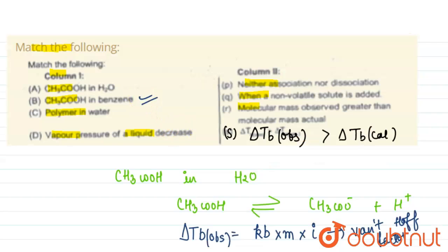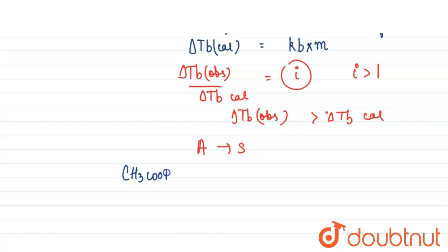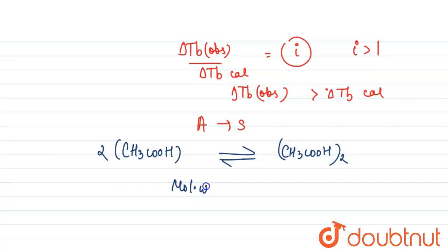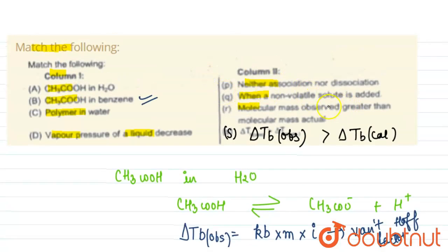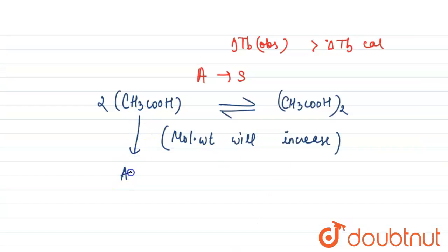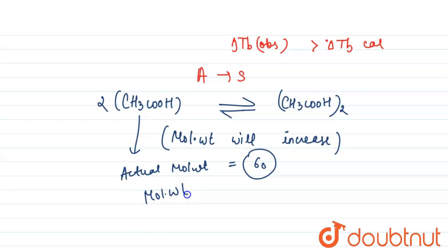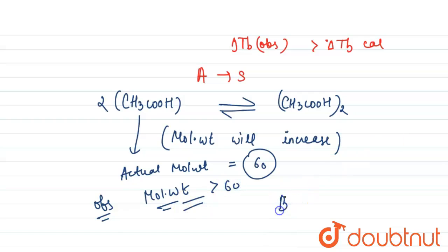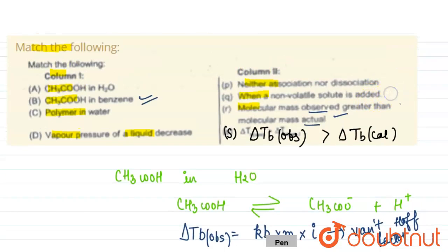When we talk about acetic acid in benzene, acetic acid dimerizes in benzene — two molecules dimerize. So the molecular weight will increase. Therefore B is matched with R: observed molecular mass will be greater than actual molecular mass. The actual molecular mass is 60, but in solution it dimerizes, so the observed molecular mass will be greater than 60.